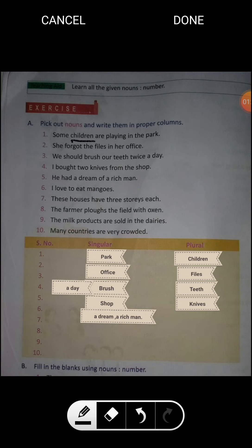So we should write children in plural column as I have done it. In the first sentence, next noun we have park. The park is singular in number. So we should write the park in singular column.